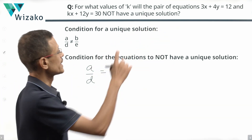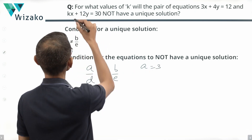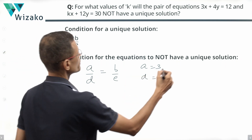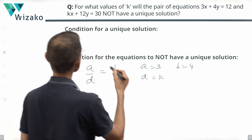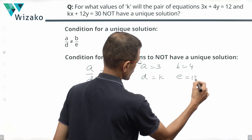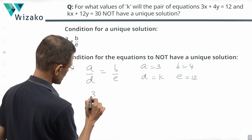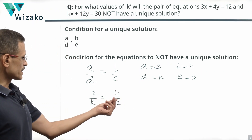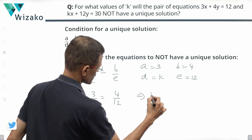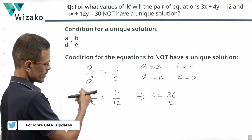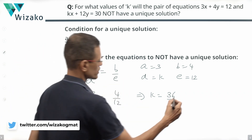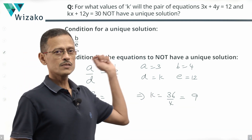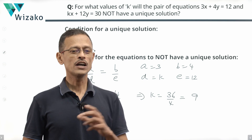Let's plug that into this question. In our equations, A = 3, D = k (the x-coefficients), B = 4, and E = 12 (the y-coefficients). For no unique solution, we need A/D = B/E: 3/k = 4/12. Cross multiplying: 3 × 12 = 4 × k, so 36 = 4k, giving k = 9. When k = 9, this pair of linear equations will not have a unique solution.